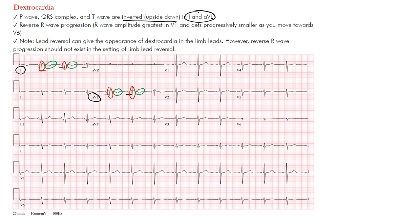The other thing you want to note is that there is reverse R wave progression. So what does R wave progression mean? We tend to look at this from V1 all the way up through V2, V3, V4, and V5.